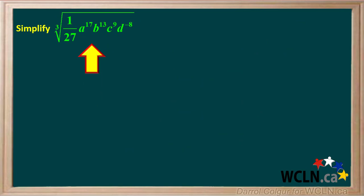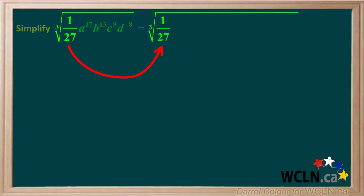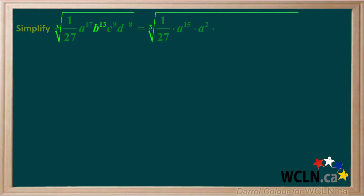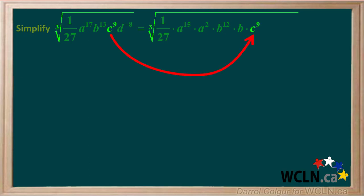Let's do a more complex example. We're asked to simplify the cube root of 1/27th a to the 17th b to the 13th c to the 9th d to the negative 8th. 1/27th is a perfect cube, so we'll just write it here the way it is. a to the 17th can be broken down to the perfect cube a to the 15th times a squared. b to the 13th can be broken down to the perfect cube b to the 12th times b. c to the 9th is already a perfect cube, so it can be written here the way it is.